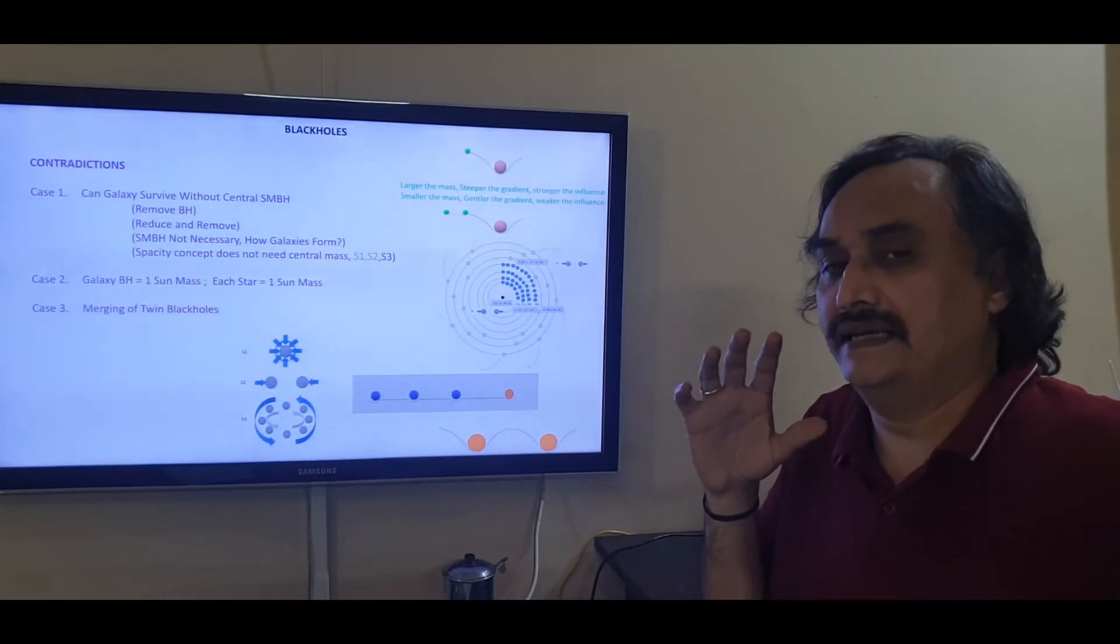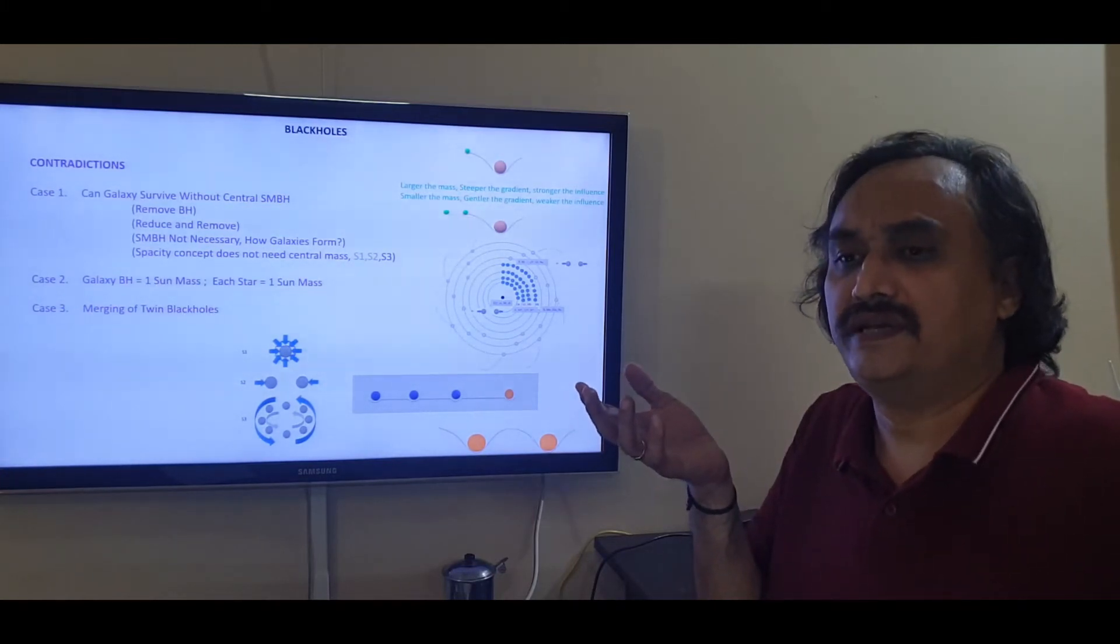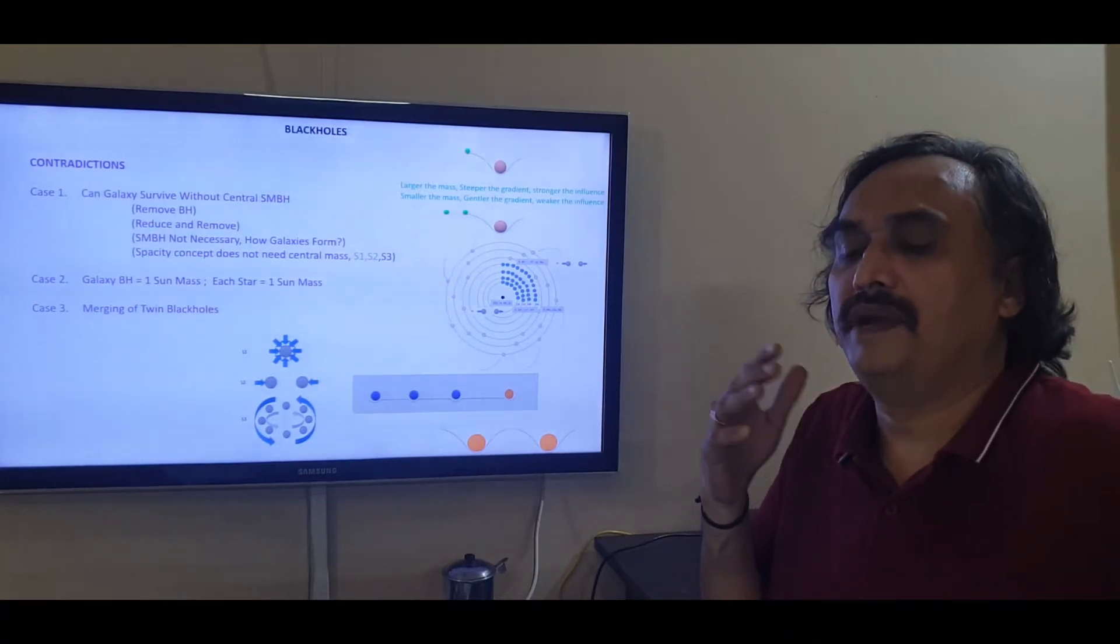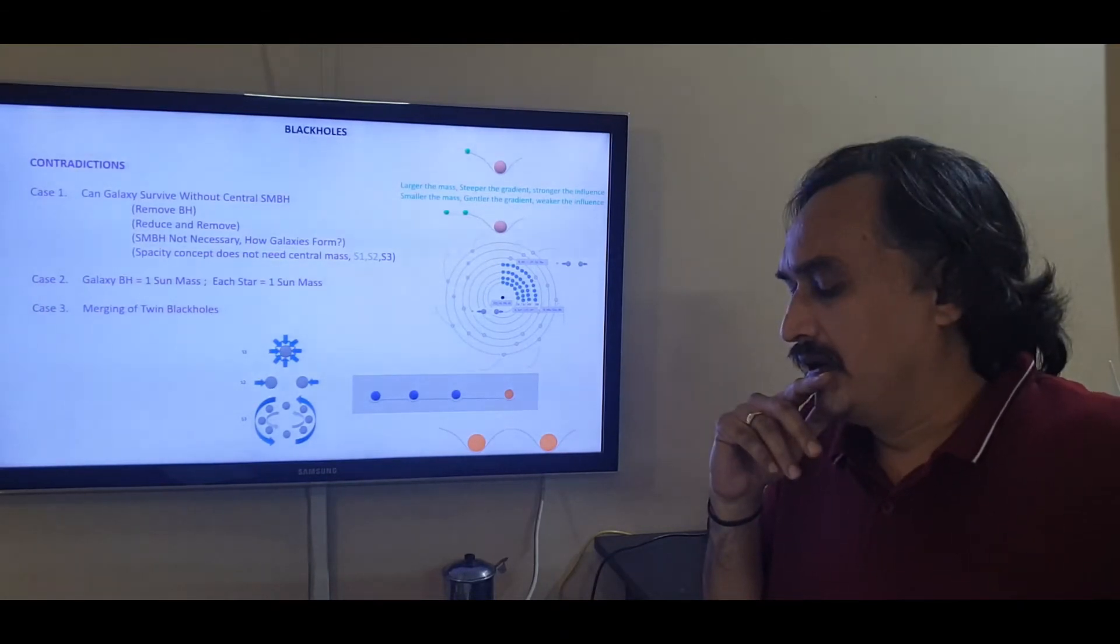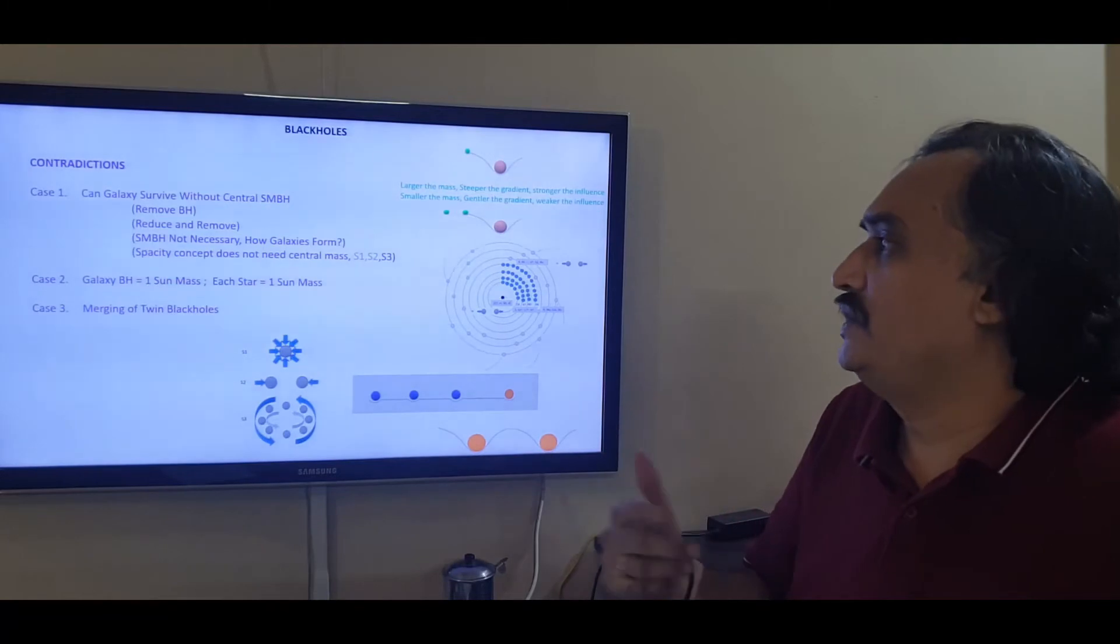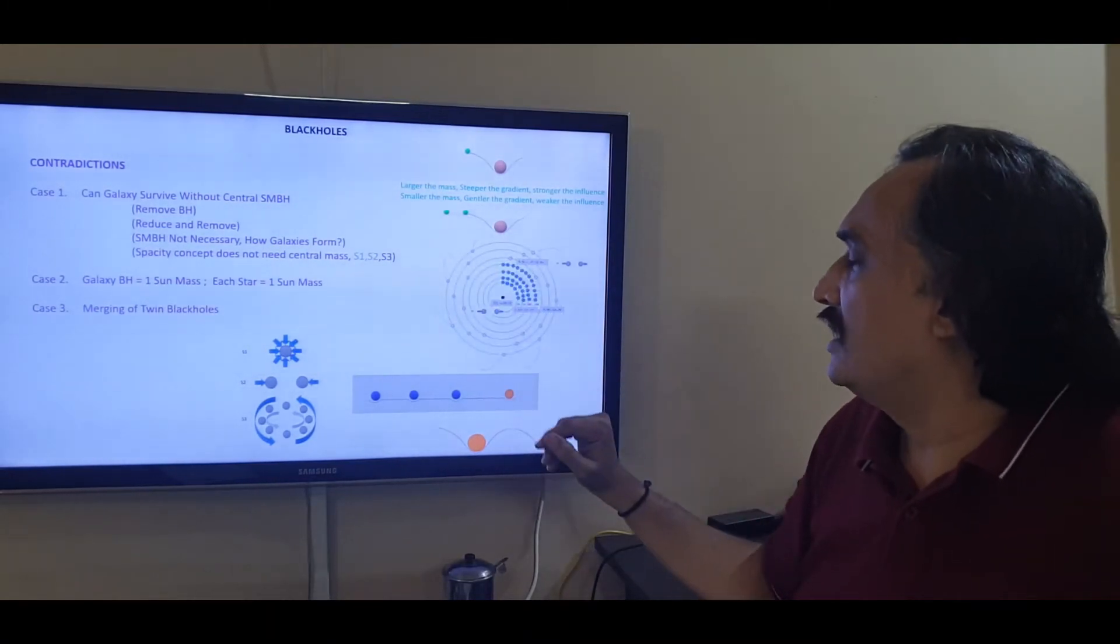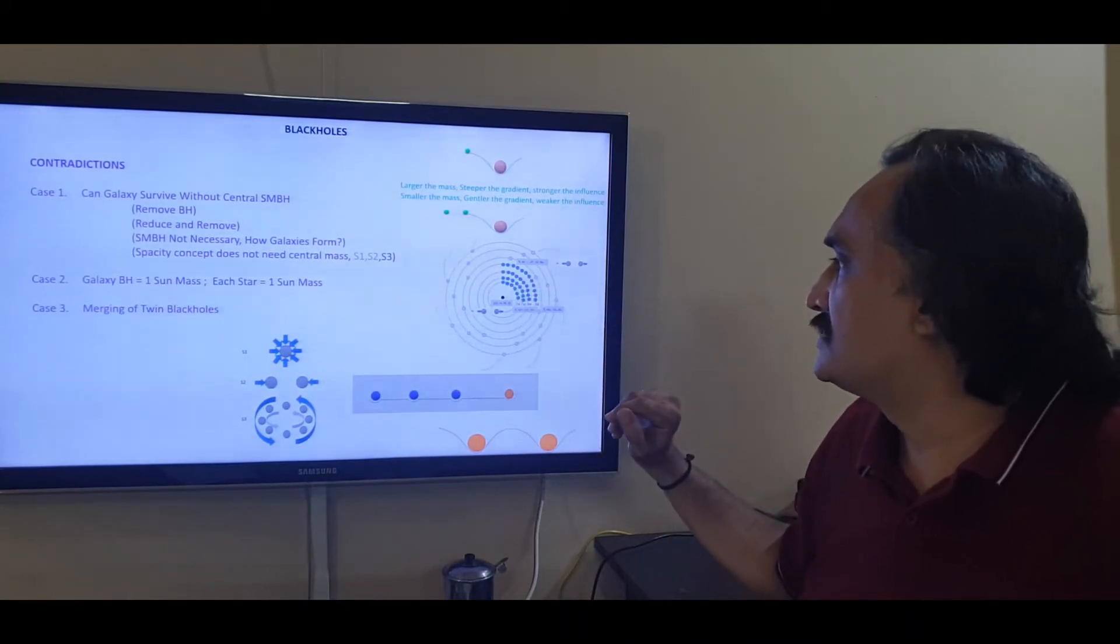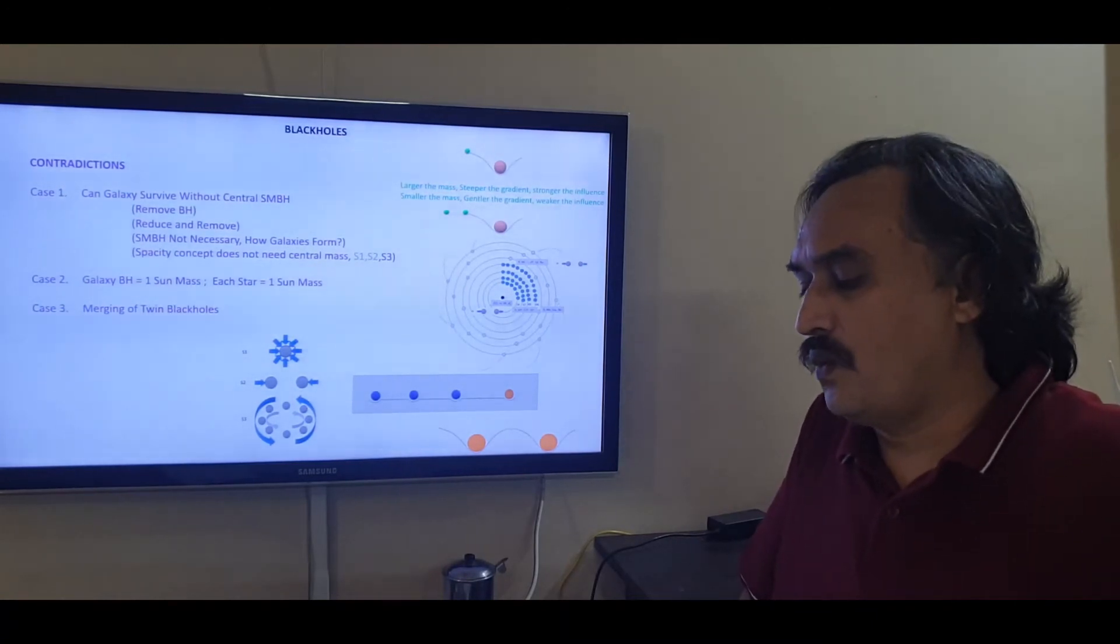The next contradictions are theoretical in nature. But you know, whenever we propose a theory, a theorem, it should be applicable both in theory as well as in practice. The assumption that we are making here is, you see all the constituents of this galaxy, which is basically the stars in the inner wings, stars in the spiral arm, and the supermassive black hole at the center.